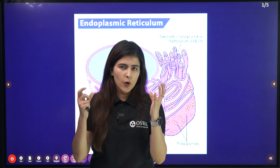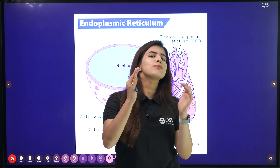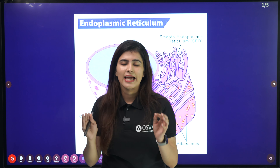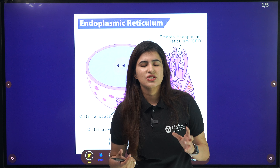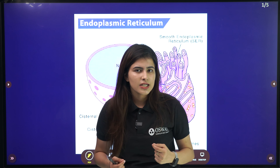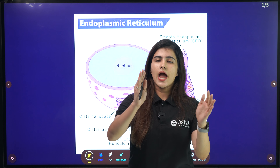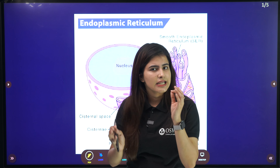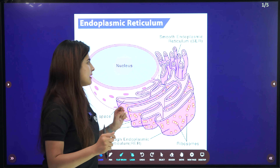Hello to all my grade 9 students. In this video we are going to cover a small topic of our cell chapter which is very important and you guys also find very confusing — I am talking about our ER, which is our endoplasmic reticulum. We have studied the whole cell chapter but I have noticed that you have doubts in cell organelles, so we will study all cell organelles individually in bits and pieces.